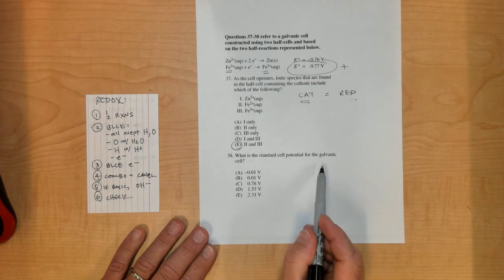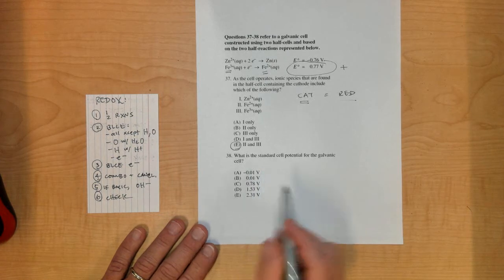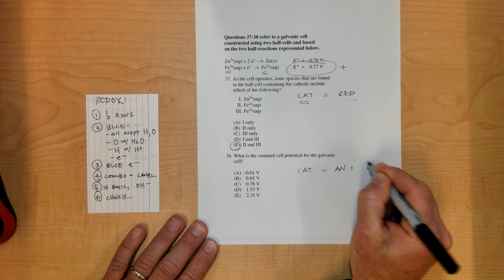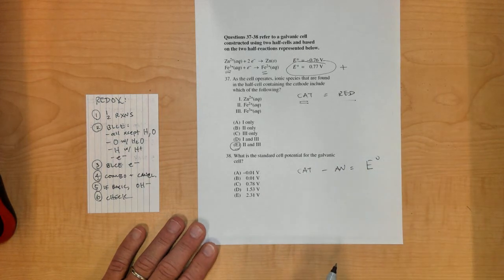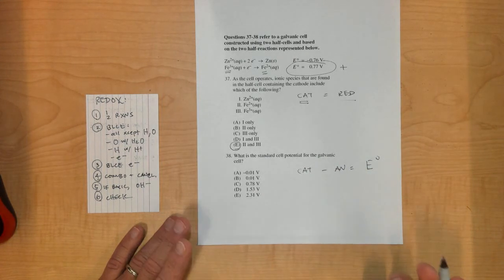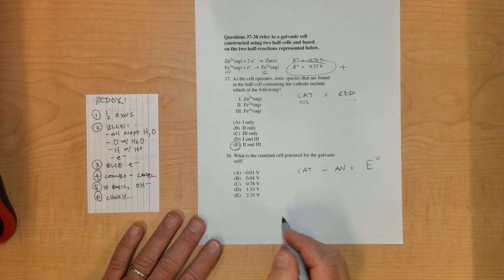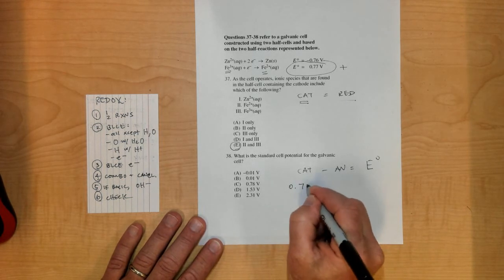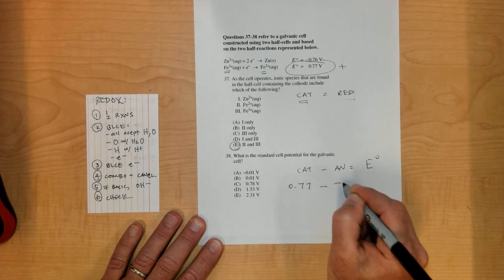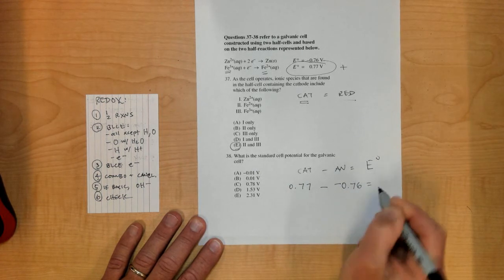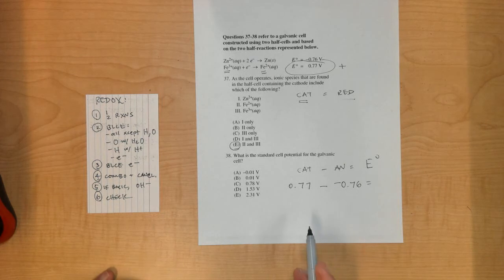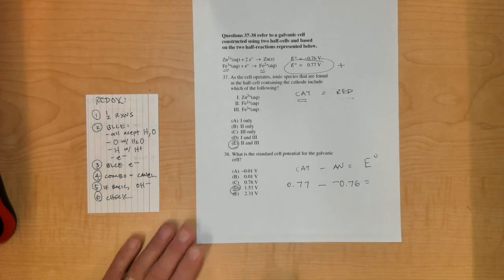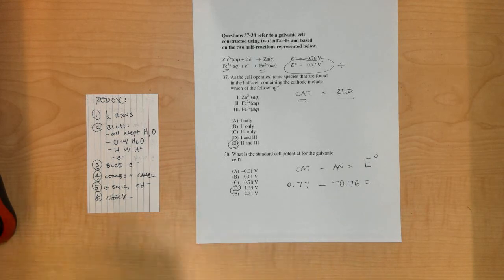What is the standard potential for this galvanic cell? Remember, it's always cathode minus anode. That gives me the standard cell potential, or E circle, or the EMF of the cell. My cathode is 0.77 minus a minus 0.76, so I'm going to get about 1.53 when I add those together.